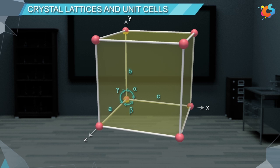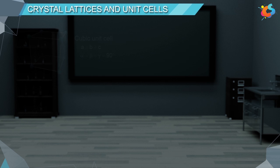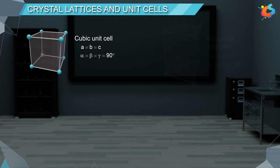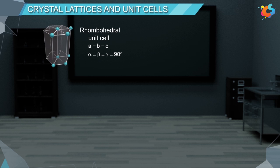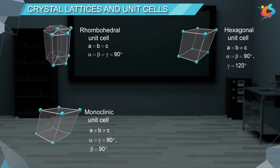There are seven possible combinations of A, B, C and alpha, beta, gamma forming seven types of unit cells. These are also called crystal systems. They are: cubic unit cell, tetragonal unit cell, orthorhombic unit cell, hexagonal unit cell, rhombohedral or trigonal unit cell, monoclinic unit cell, and triclinic unit cell.